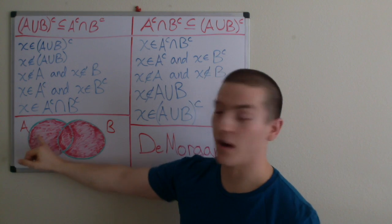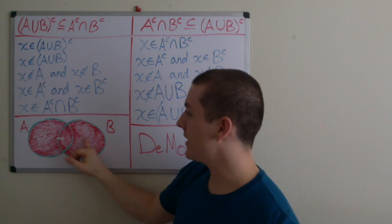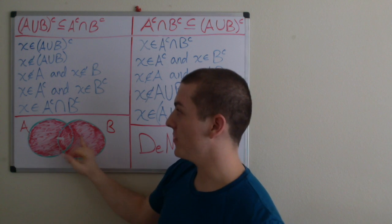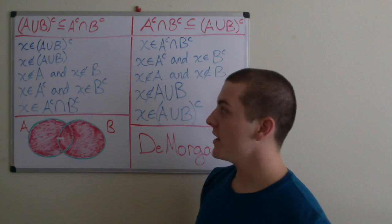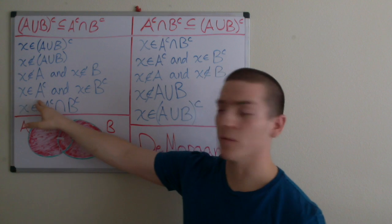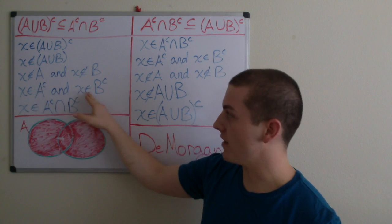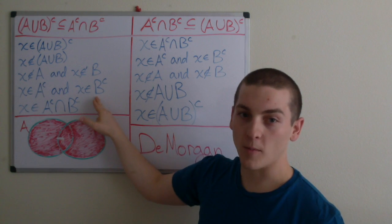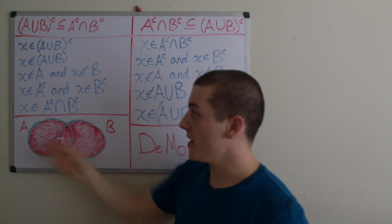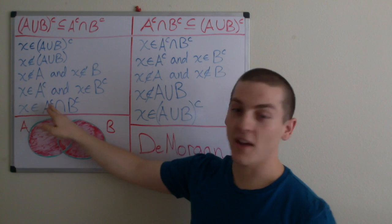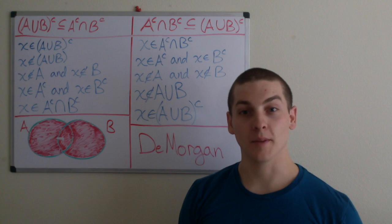then surely x is not an element of A, and x is not an element of B. And if that's the case, then by definition, x is not an element of A complement, and x is not an element of B complement. Therefore, x is not an element of A complement intersection B complement.